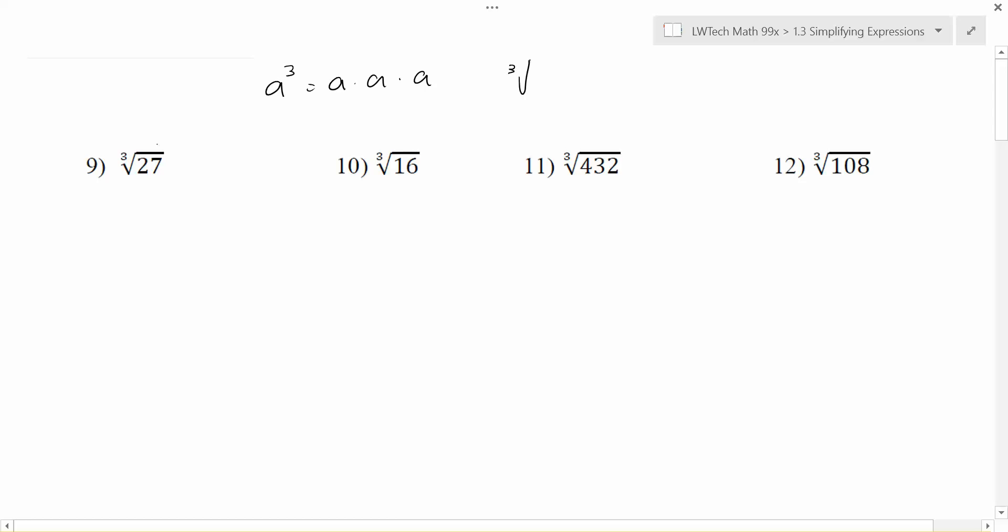So if you take the cube root of something, we're looking for what number you could multiply by itself three times to come up with the number that's inside. For example, if you think of the number 27, 27 is 3 times 3 times 3. So the cube root of 27 is just plain old 3.